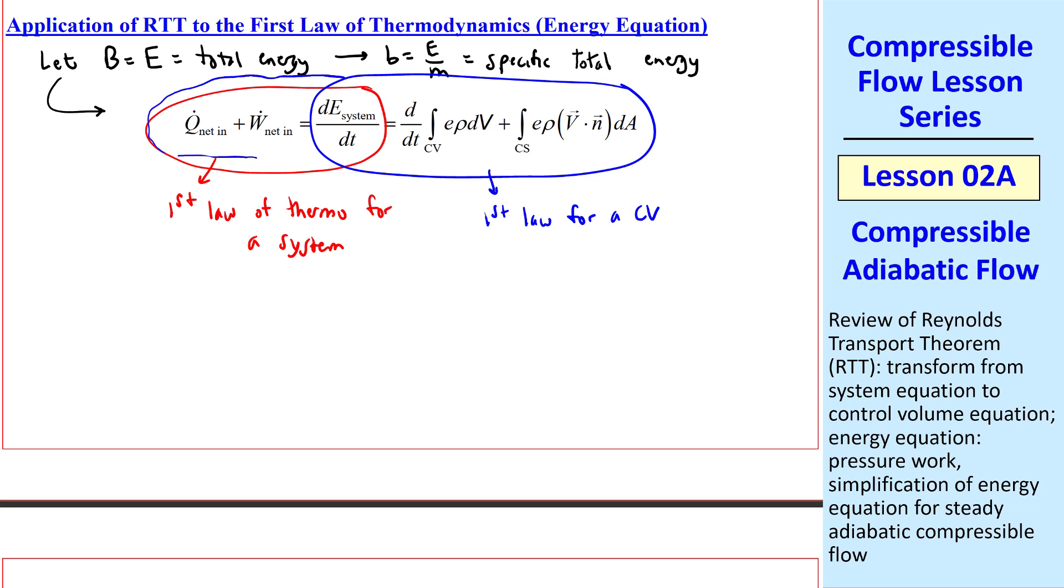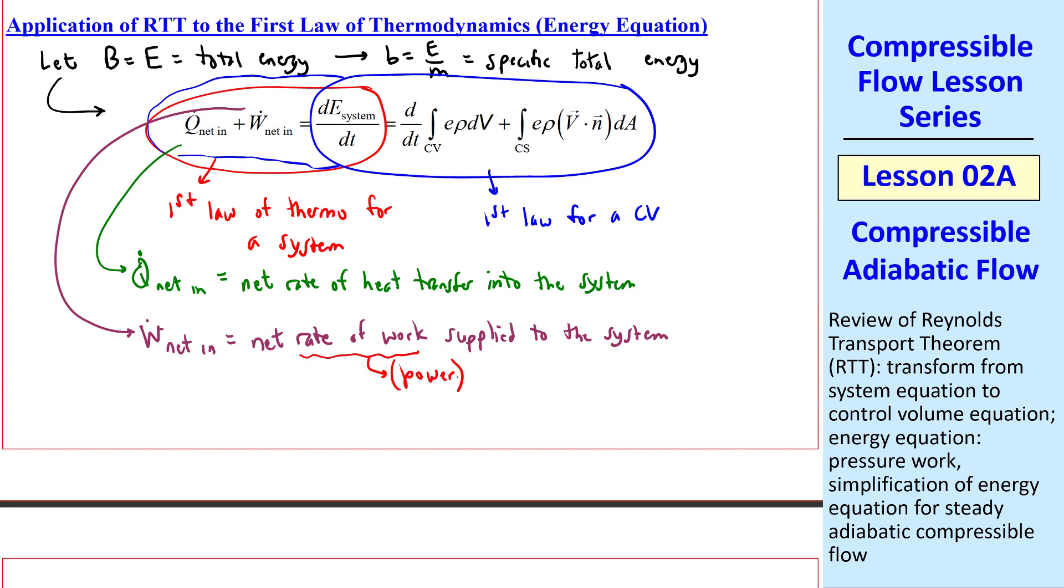But as is typical, we include these left-hand terms in place of this for our control volume equation. Note that Q dot net in is the net rate of heat transfer into the system, and W dot net in is the net rate of work supplied to the system. This term is positive when heat enters the system, and this term is positive when work is done to the system. And we know that rate of work is power. Thus, as we recall from our thermo class, the net rate of change of total energy of a system is equal to the net rate of heat added to the system, plus the net rate of work done on the system.